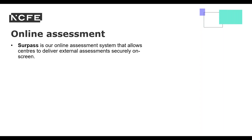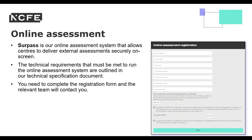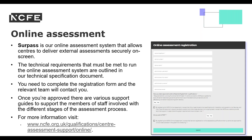Please refer to the external assessment timetable on our website for confirmation of the exact EA dates, which will be published a year in advance. Surpass is our online assessment system that allows centres to deliver external assessment securely on screen. The technical requirements to run the online assessment system are outlined in our technical specification document. You need to complete the registration form and a member of the relevant team will contact you. Once approved, there are various support guides aimed at staff involved with the different stages of the assessment process.